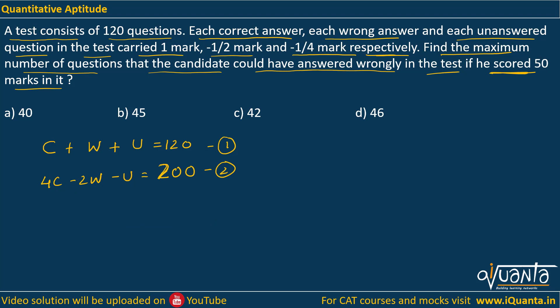If we add these two equations, the U terms cancel out, giving us 5C − W = 320. This is the final combined equation that we get.